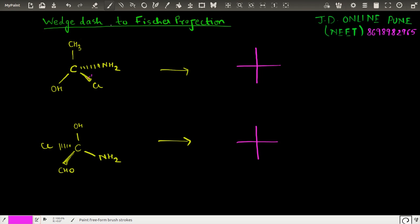Now how do we convert this wedge dash into Fischer? Fischer is another way of representing a three-dimensional molecule. Now the rule goes something like this. We will have to view the molecule in such a way that the bond appearing on the vertical line should be moving away from the observer.